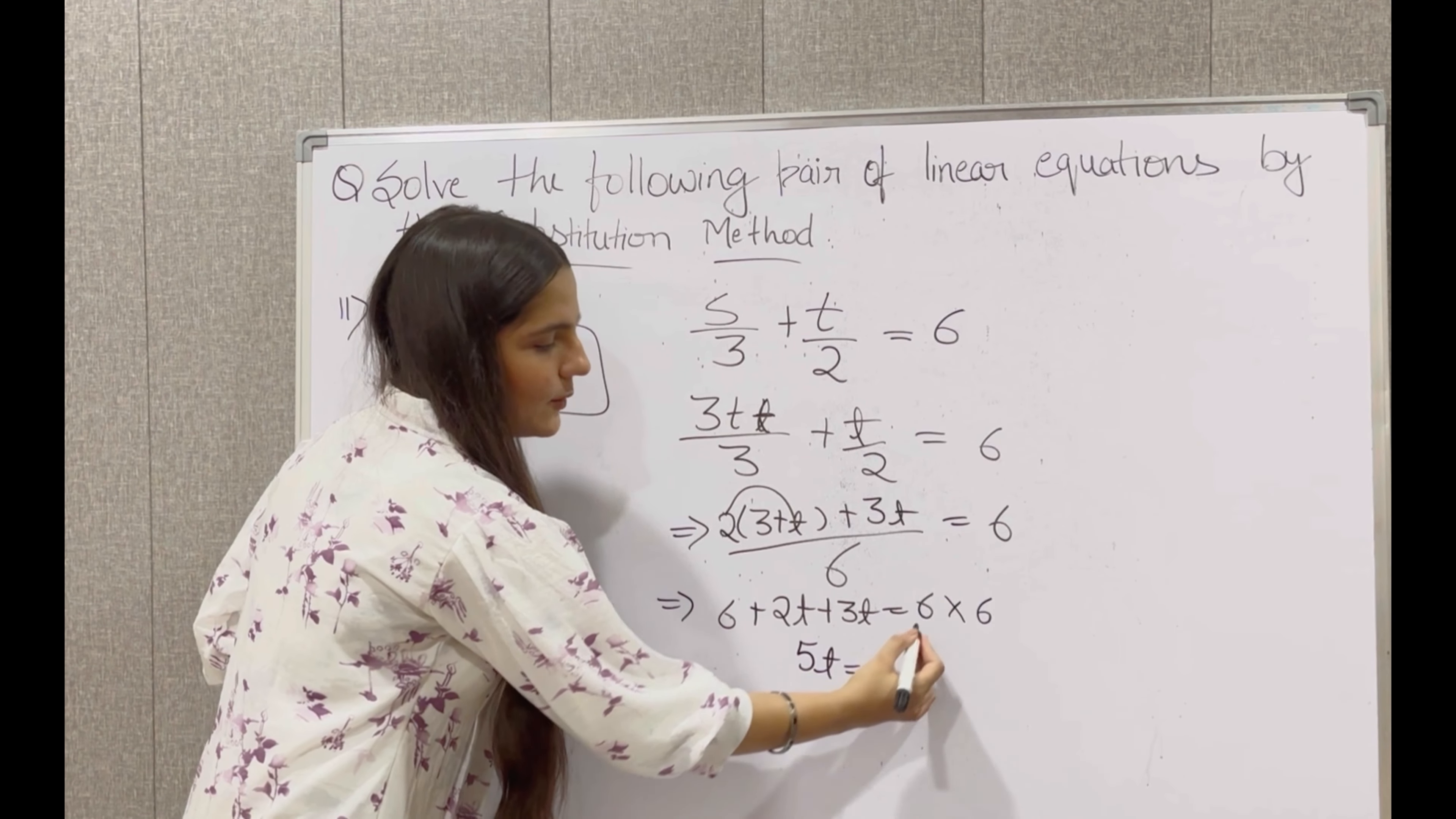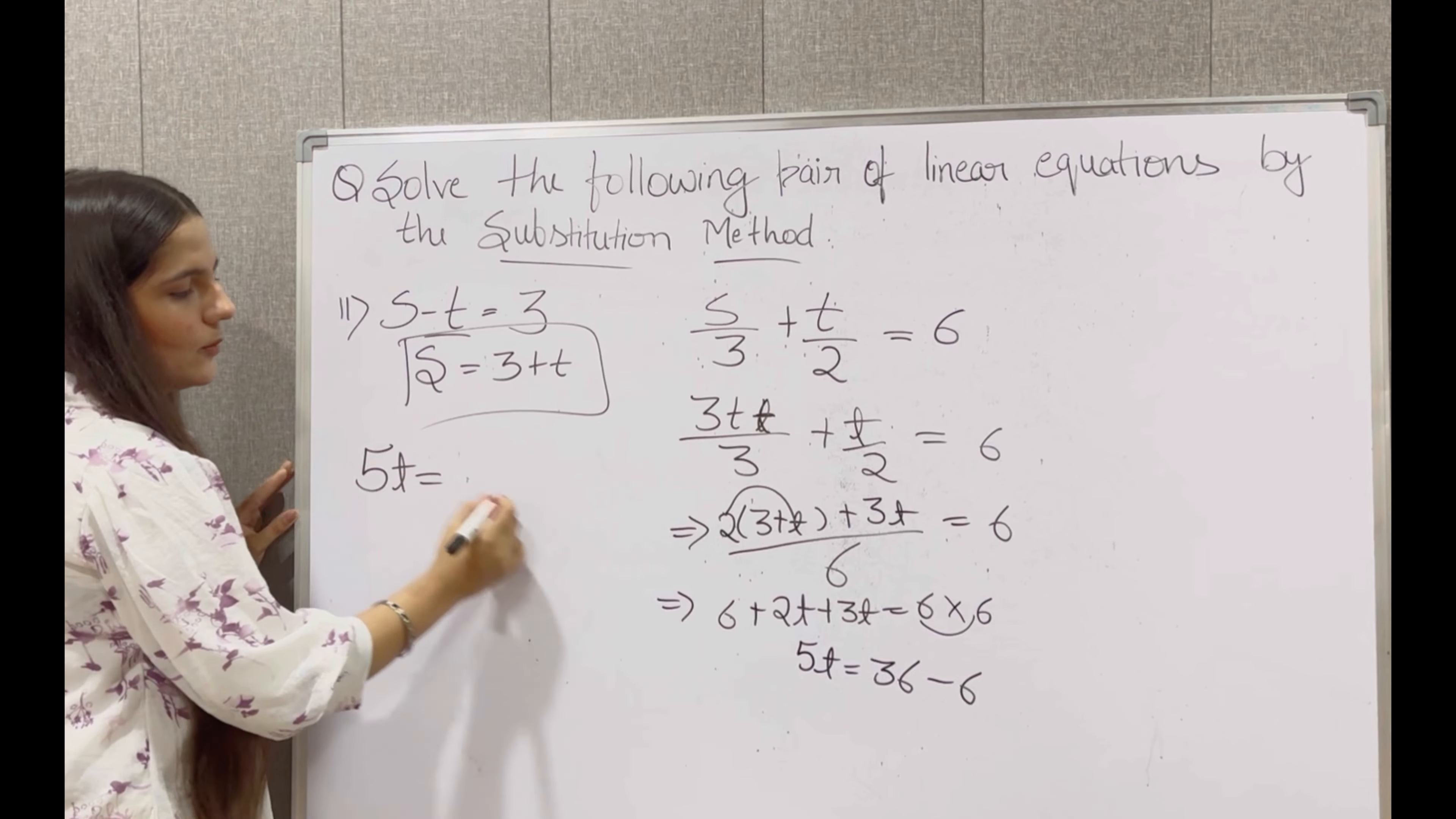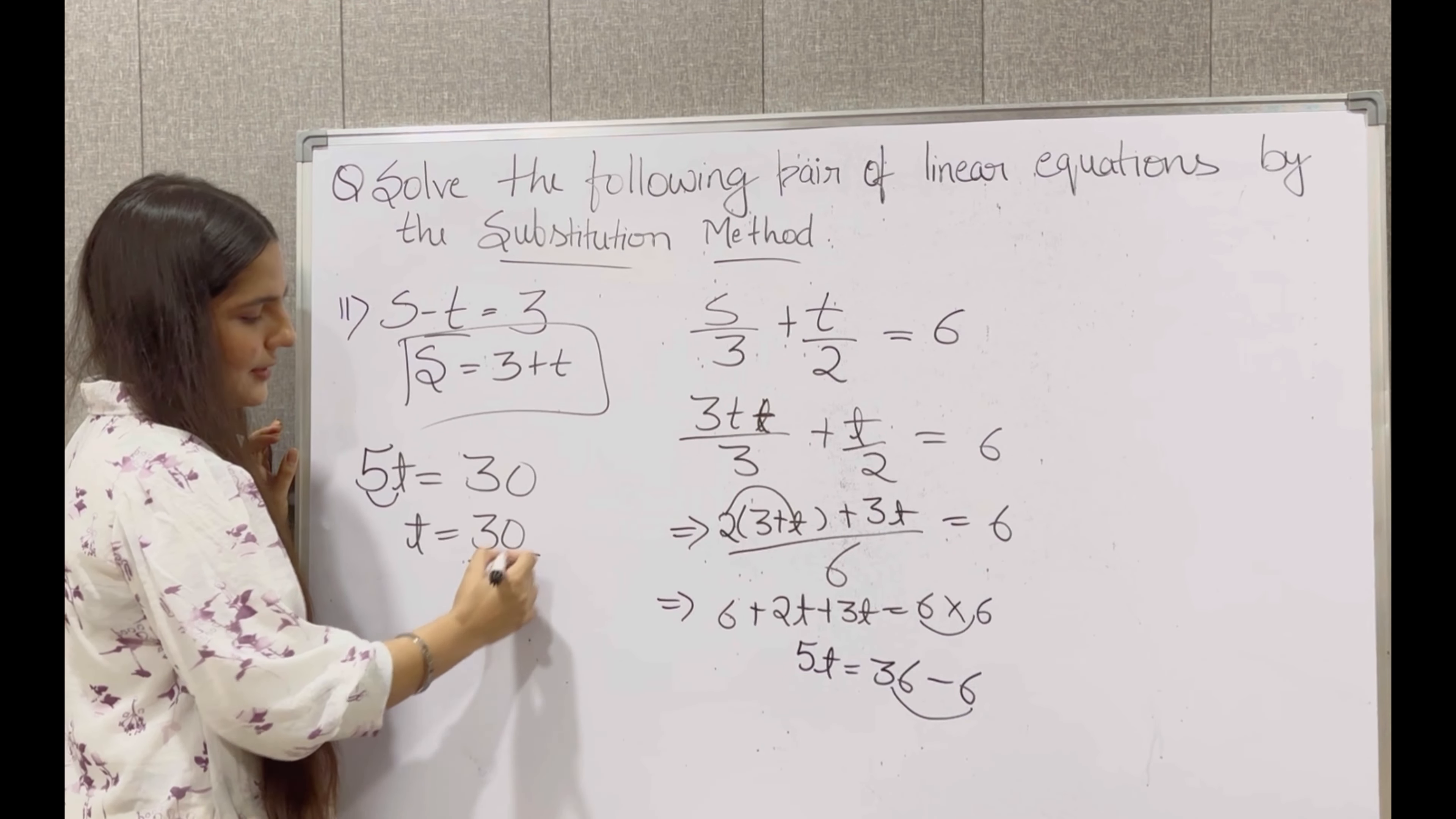So 5t is equal to 6 into 6. 3 plus 2 gives us 5t. So 5t is equal to 36. This 6 will go to the other side in minus. So minus 6. So we are having 5t is equal to 36 minus 6 gives us 30. So 5 is in multiplication, it will go in division.